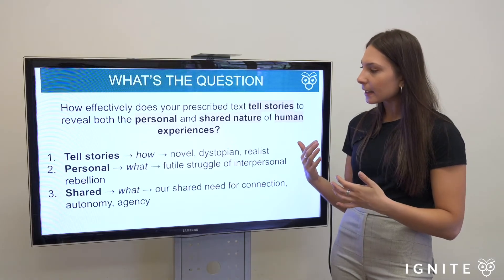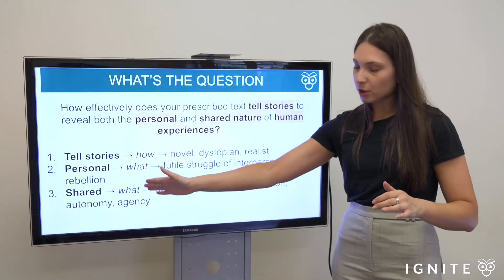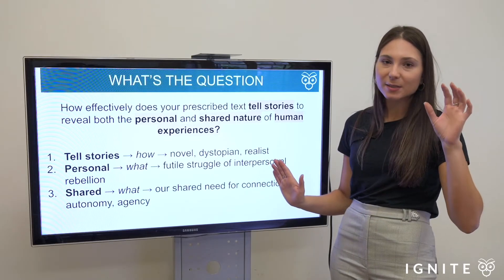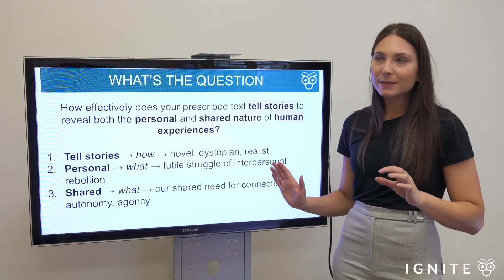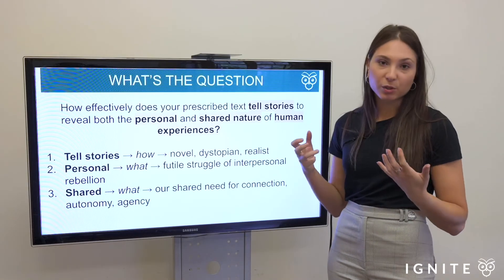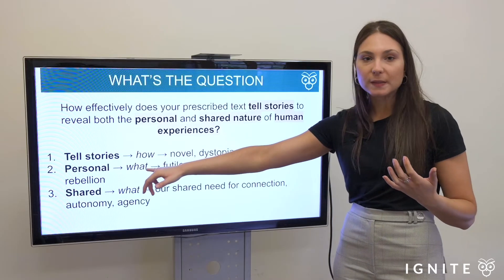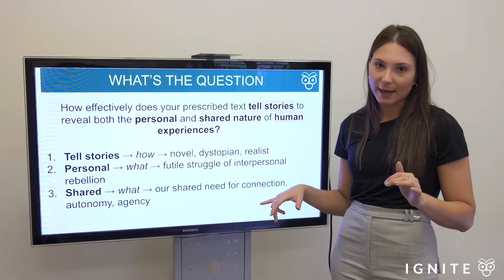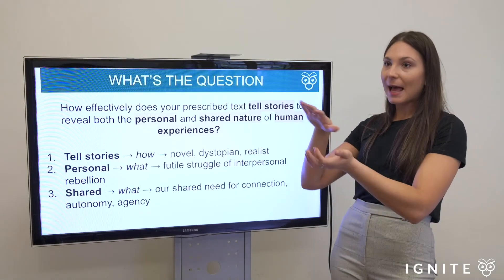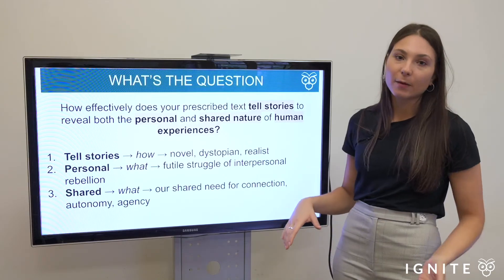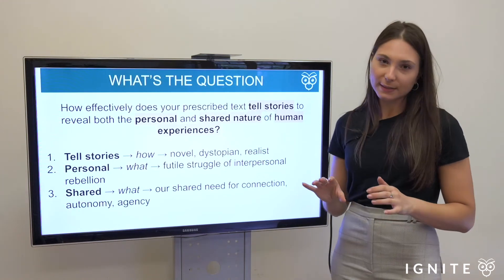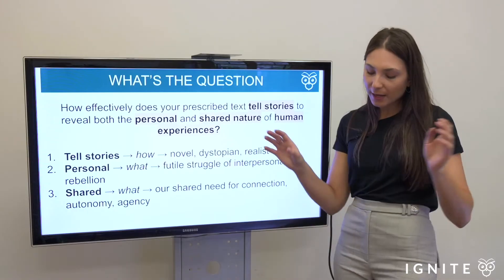Obviously how you answer the relevant micro question for each part of the question will depend on your exemplar. If you focus in your exemplar on totalitarianism, or specifically the sexual relationship between Winston and Julia, you would answer these questions differently — because you're making the thesis work for what you want to go on to say. This thesis as I've unpacked it would look to paragraphs focusing on interpersonal rebellion, a lack of agency, or the desire for human connection to overcome the totalitarian state. It's quite an empowering tool.